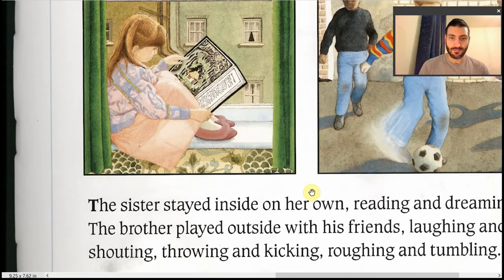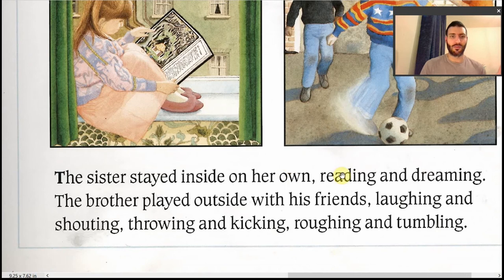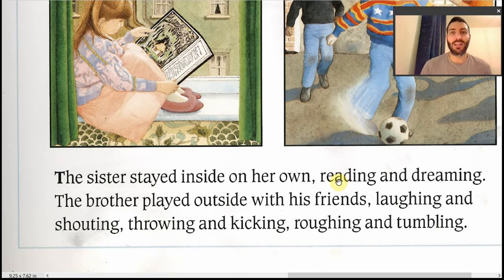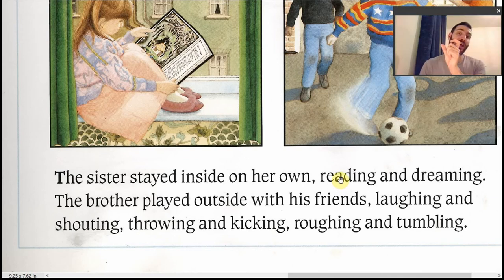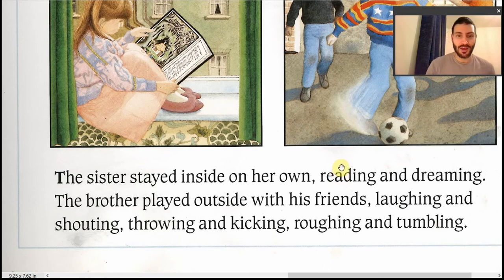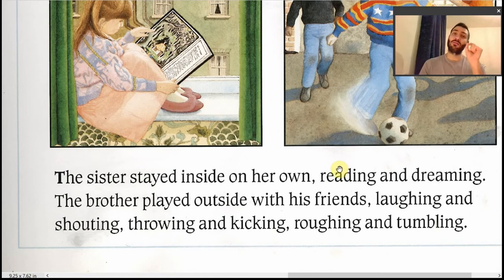There's a nice little collection of phrases here: 'reading and dreaming,' 'laughing and shouting,' 'throwing and kicking,' 'roughing and tumbling.' Children would ask, why are you using 'and' each time? You've taught us to just do commas. It's a nice entry point into how you can play around with language once you learn to master it. Children can get a glimpse of how if you use two verbs together with a similarity, you can put a conjunction between them.